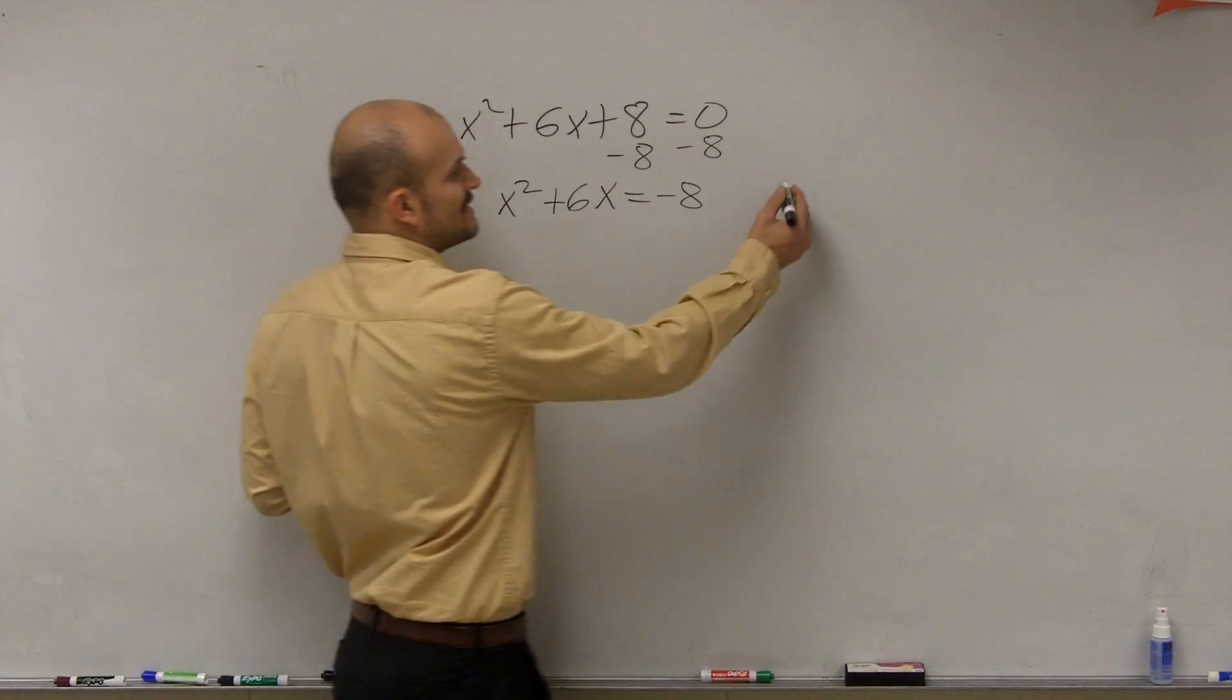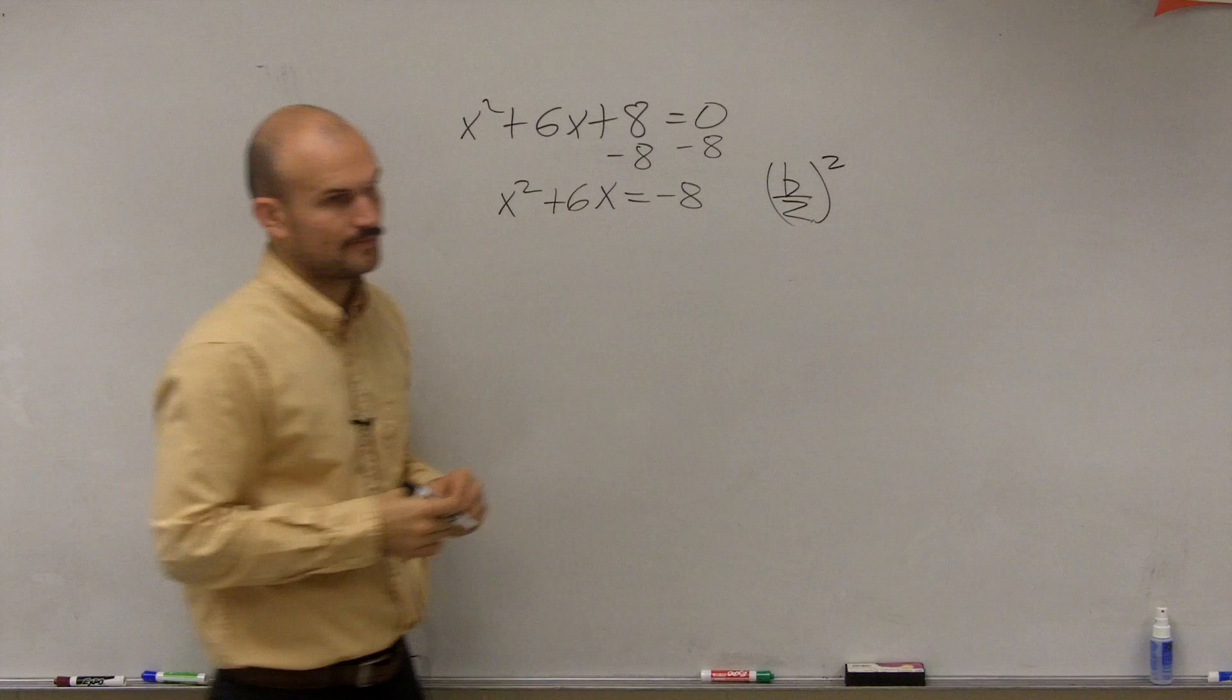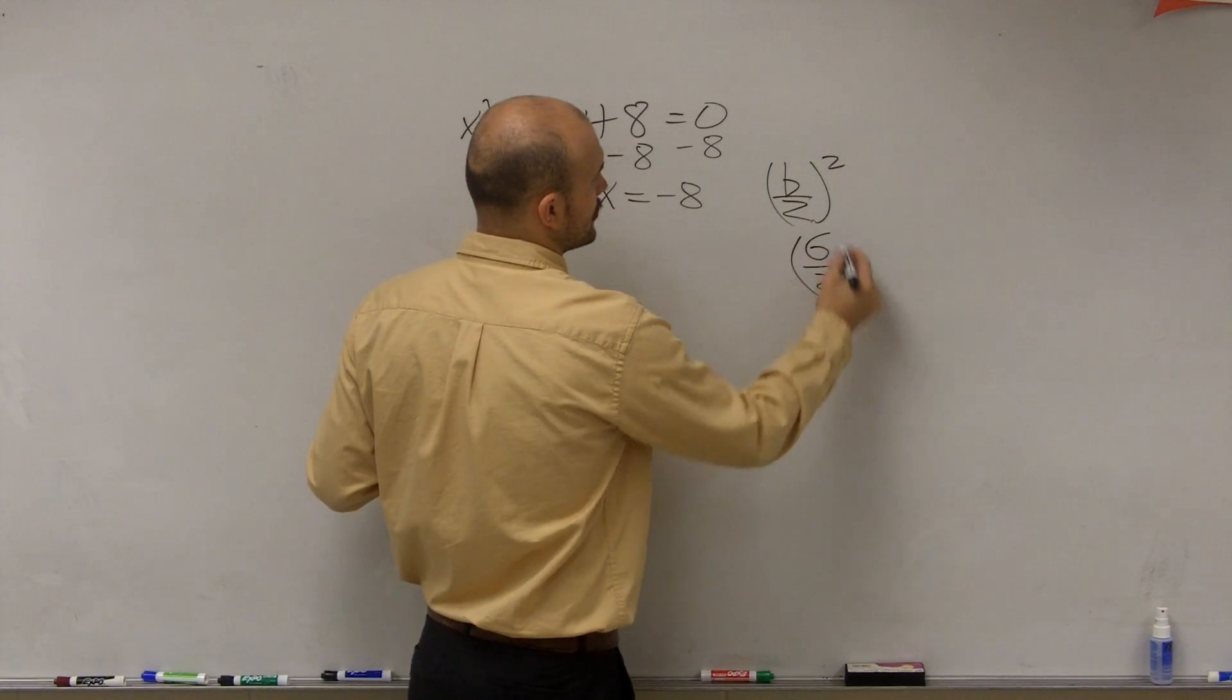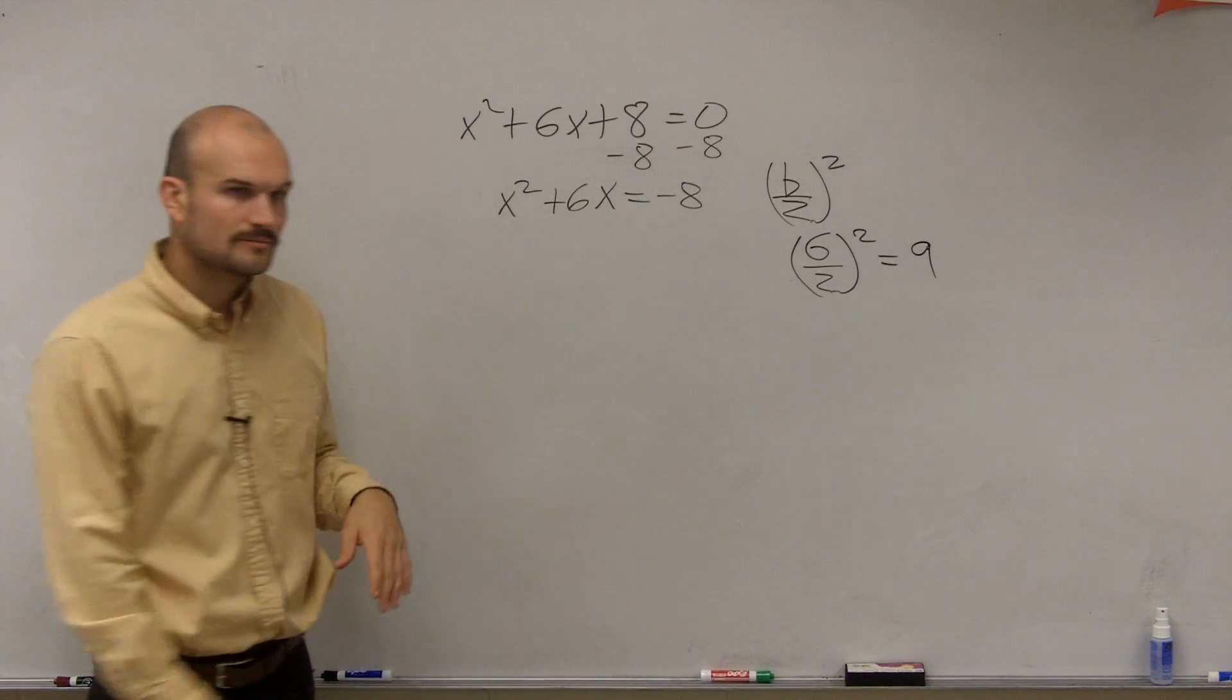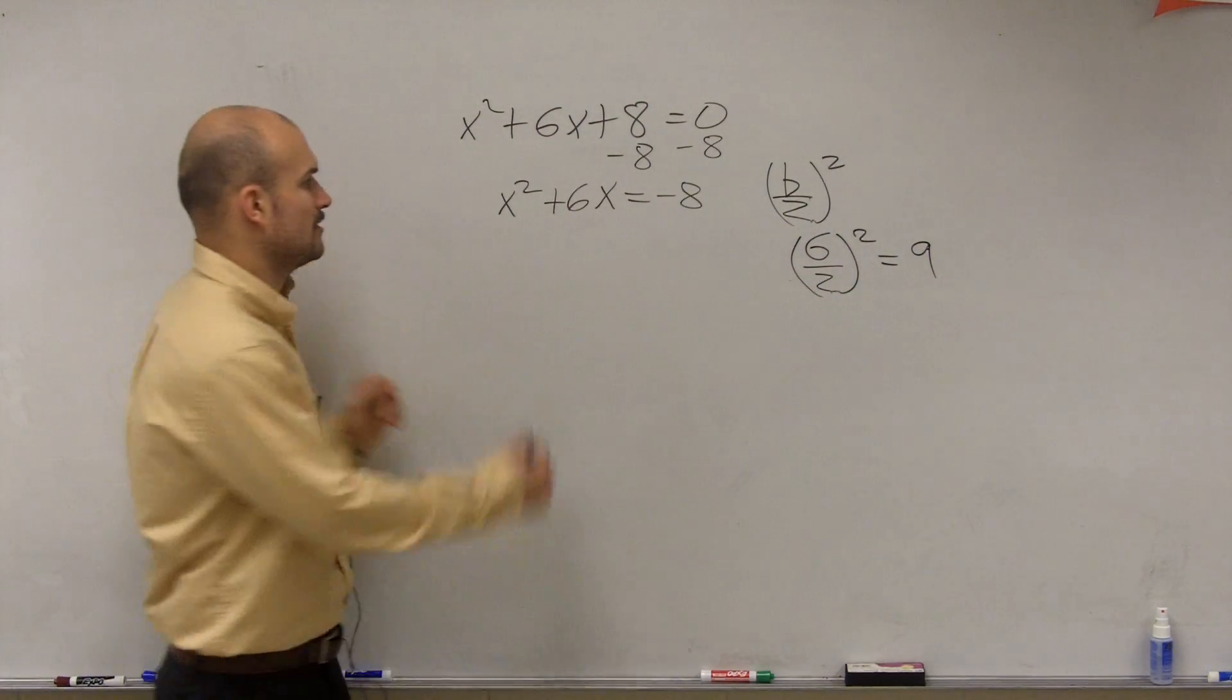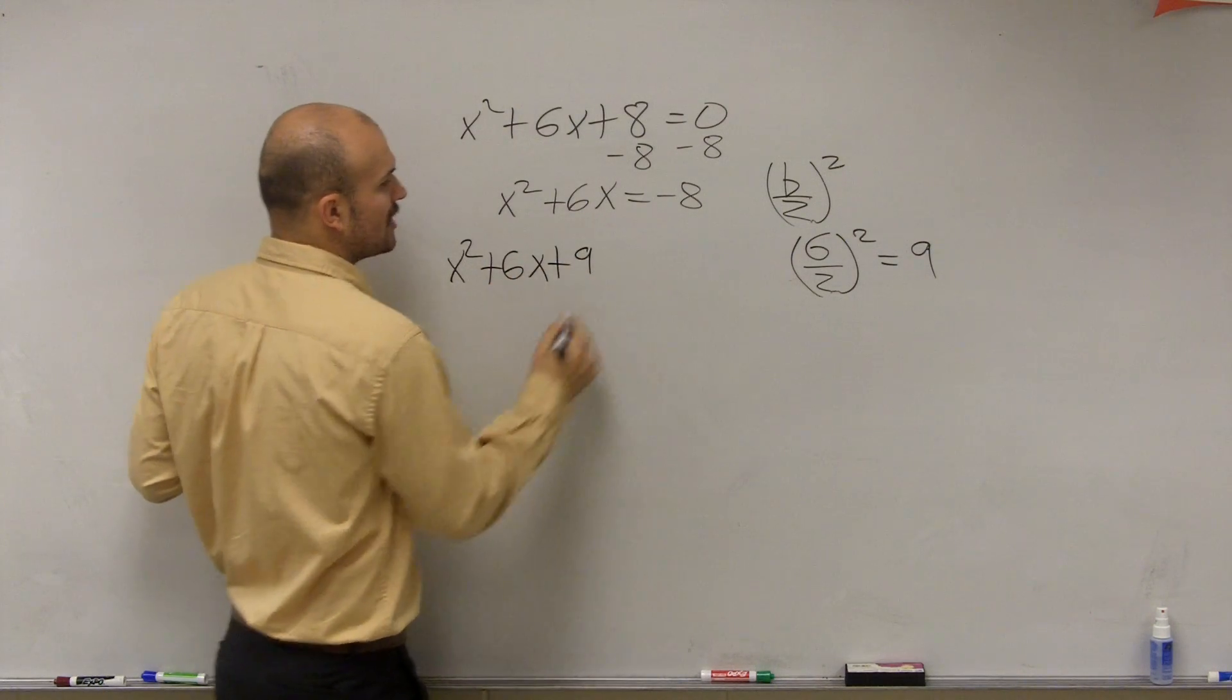So to do that, I take b divided by 2 and square it. So in this case, I have 6 divided by 2 squared. Well, 6 divided by 2 is 3, 3 squared is 9. So now 9 is the value that makes a perfect square. So I have x squared plus 6x plus 9. That is now a perfect square.